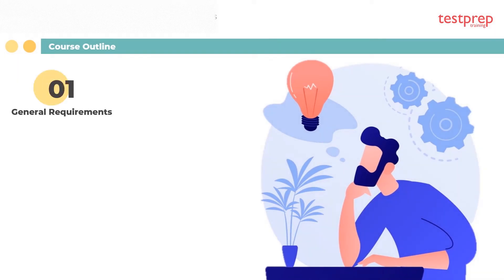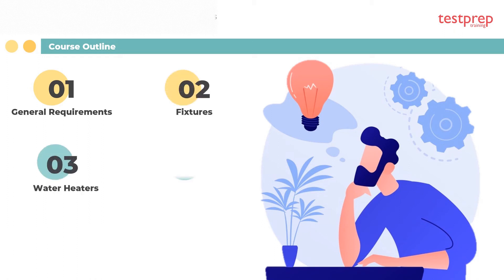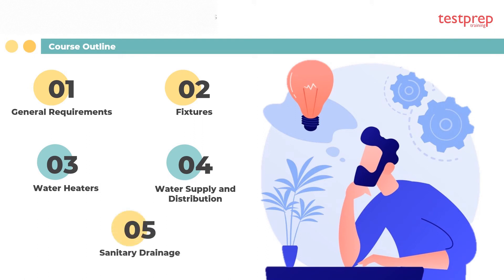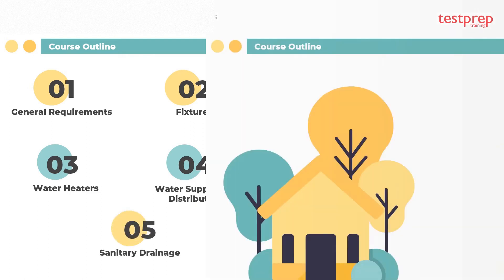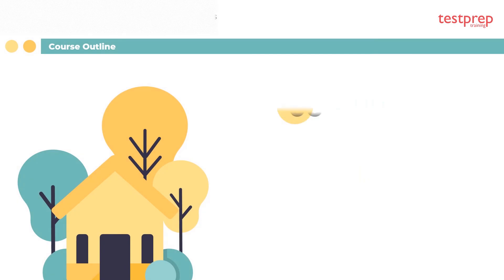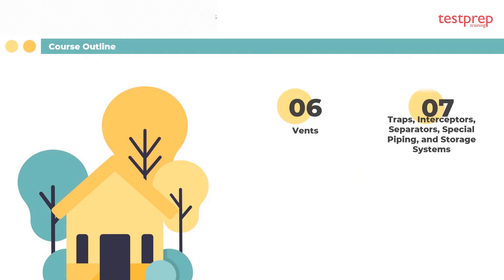Now let's discuss the course outline: one, general requirements; two, fixtures; three, water heaters; four, water supply and distribution; five, sanitary drainage; six, vents; seven, traps, interceptors, separators, special piping and storage systems; eight, storm drainage.